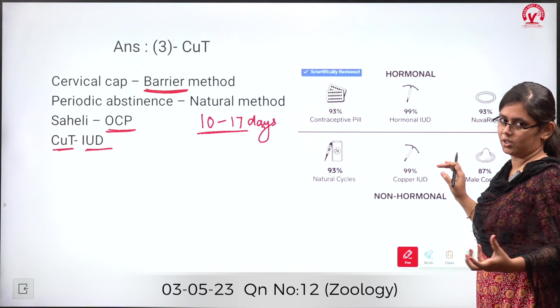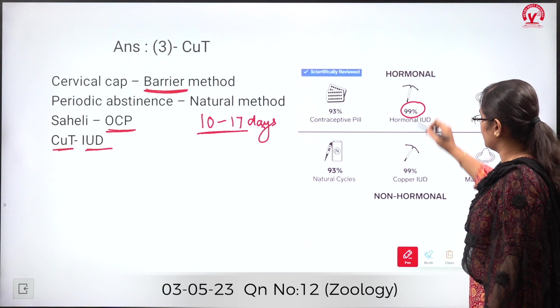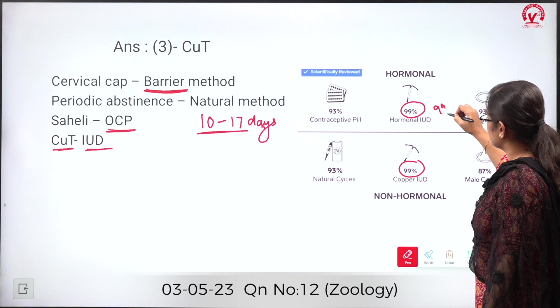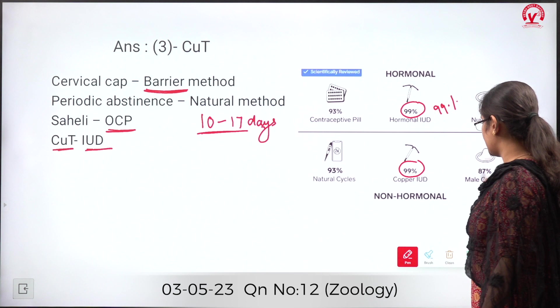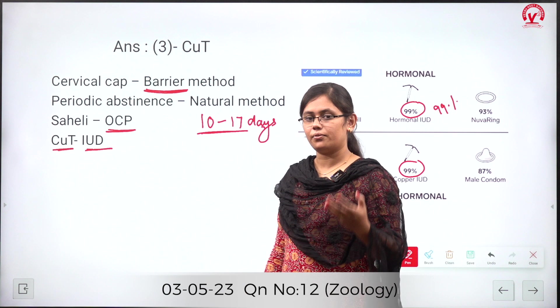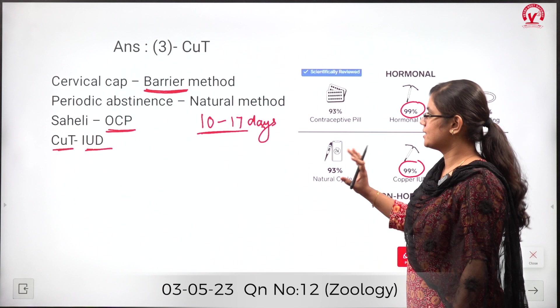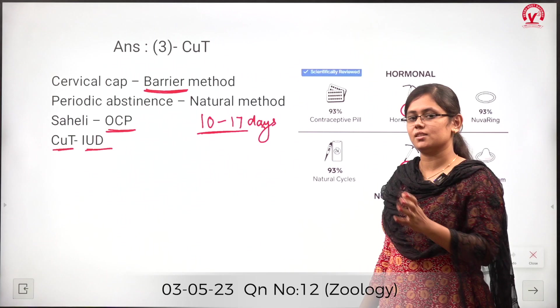IUDs are the most effective form of contraception — about 99% effective — compared to pills, natural methods, and barrier methods. That is why intrauterine devices are the most effective method and are widely followed in India. For this question, the answer is option 3, copper T, as it is the ideal method of contraception to delay pregnancy in women.